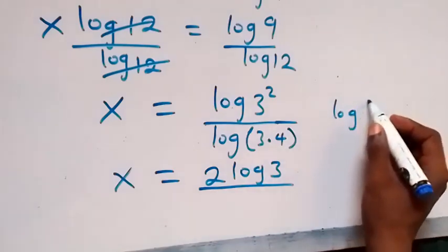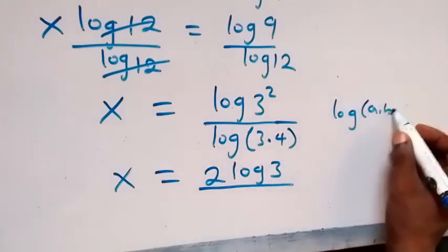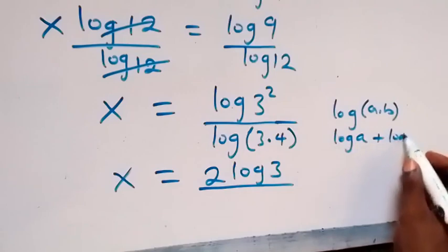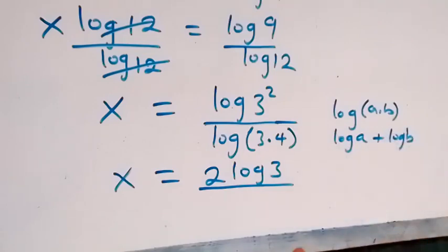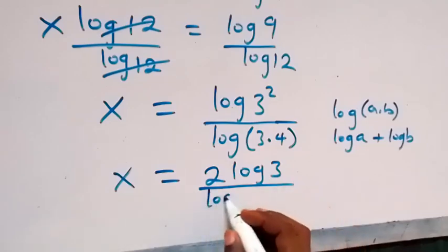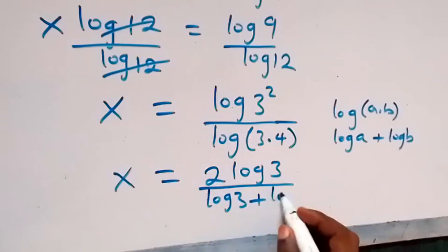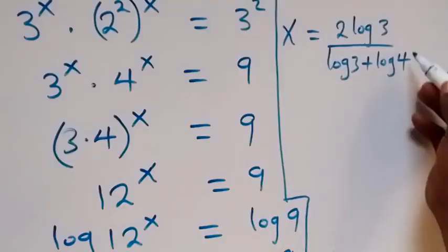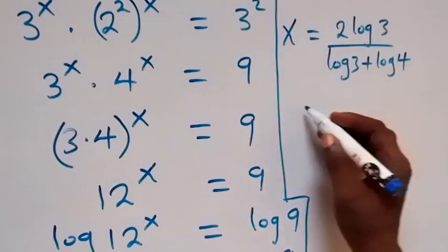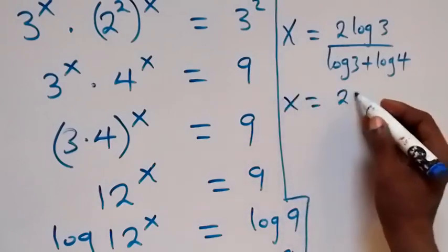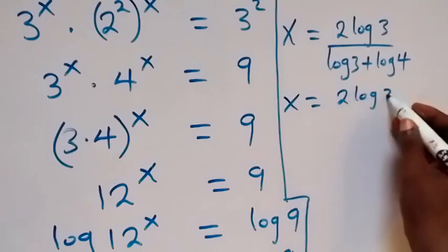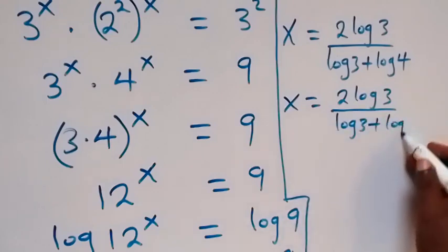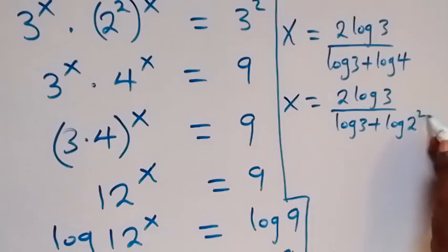From the law of logarithms, log a times b can be separated into log a plus log b. So when we separate the denominator, we get log 3 plus log 4. We can also write log 4 as log 2 squared, so x equals 2 log 3 over log 3 plus log 2 squared.